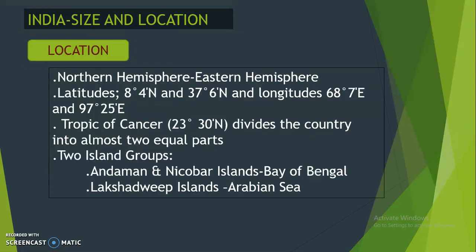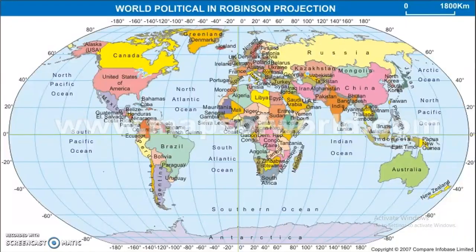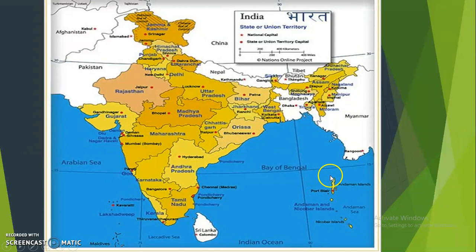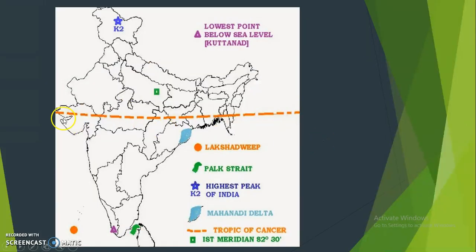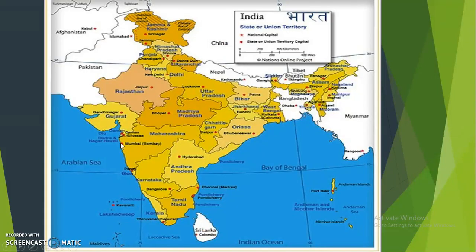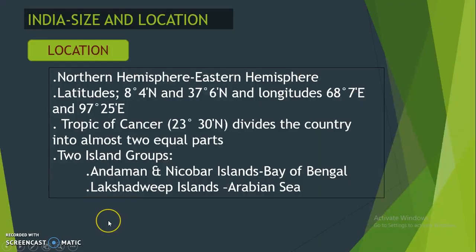The fourth point is the two island groups. One is the Andaman and Nicobar Islands, located in the Bay of Bengal. The other is the Lakshadweep Islands, located in the Arabian Sea. So in summary: India is in the Northern and Eastern Hemispheres, the Tropic of Cancer divides India into almost two equal parts, and India has two island groups — Andaman and Nicobar in the Bay of Bengal, and Lakshadweep in the Arabian Sea.